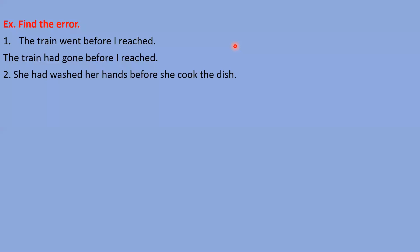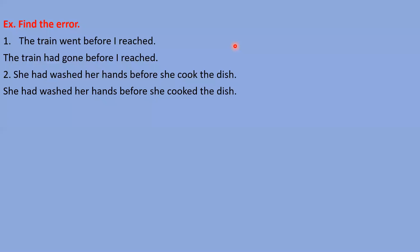Next sentence: 'She had washed her hands before she cooked the dish.' The correction is that 'cooked' will come there — in the second form — instead of another form. Yes, very good, absolutely right answer. She had washed her hands before she cooked the dish. We need to use the second form because before the 'before' conjunction we use past perfect tense, and after it we use simple past tense. Here we talk about a past action, not past of past.